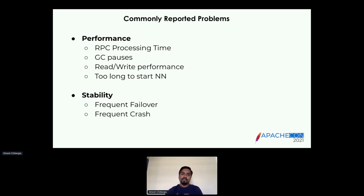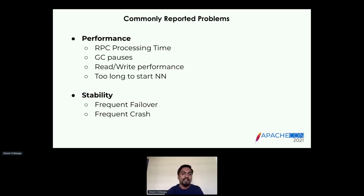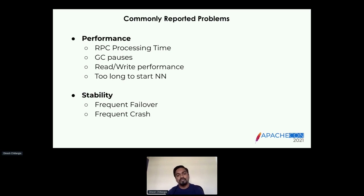It takes too long to start the NameNode if they are doing a patch upgrade or a maintenance activity. From a stability standpoint, you hear issues like frequent failovers happening between the HA instances of the NameNode, or frequent crashes. Sometimes the failover is so bad that when the transition is going on from standby to active, that node also crashes, bringing the entire system to a halt. These are some of the commonly reported problems — obviously not an exhaustive list.